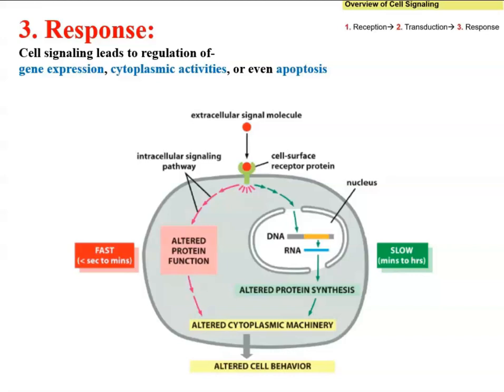Step three of cell signaling is the actual response. Cell signaling leads to regulation of many different activities because we have all these differentiated cells that are supposed to carry out different processes. So when they receive a signal, they are going to behave in a certain way.